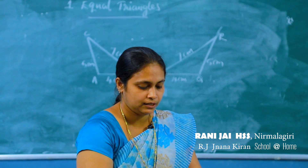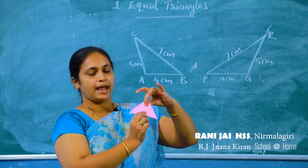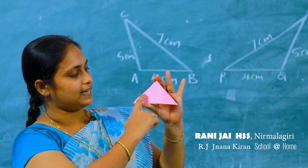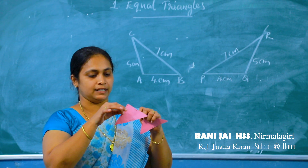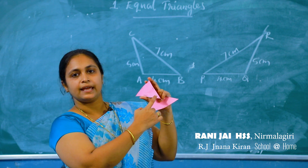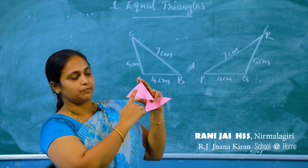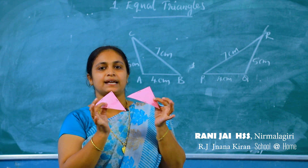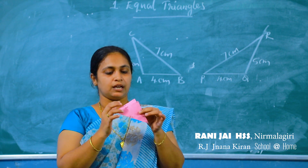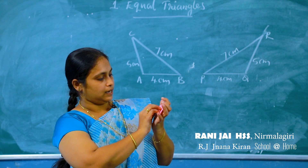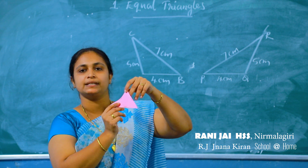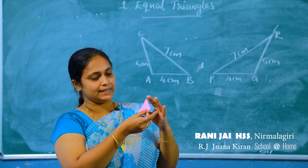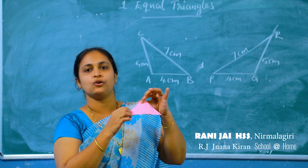Consider these two triangles. First one: triangle XYZ with sides 13 cm, 9 cm, and 10 cm. Now consider another triangle LMN, with sides also 13 cm, 9 cm, and 10 cm. In these two triangles, all three sides are equal. Let us check what about their angles. I join these two triangles one over the other. We can see that these two triangles coincide each other. That is, in these two triangles, the angles are also equal.